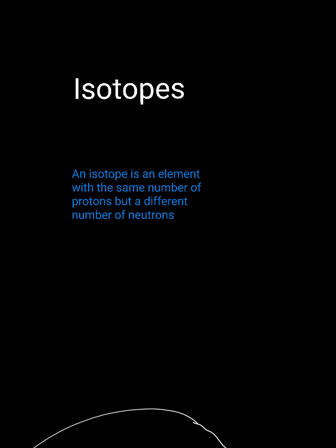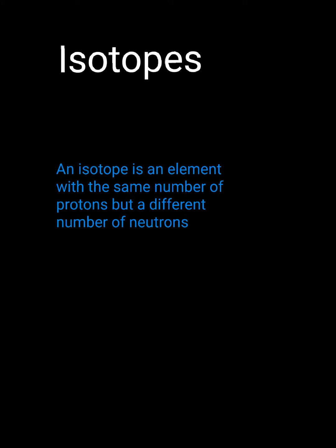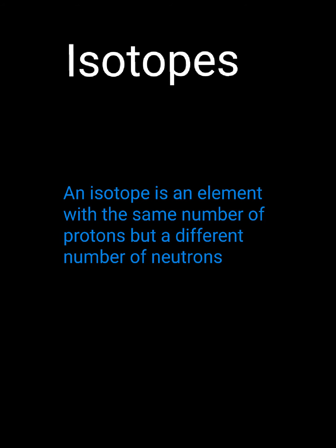In this video we're going to be looking at isotopes. An isotope is defined as an element with the same number of protons but a different number of neutrons.